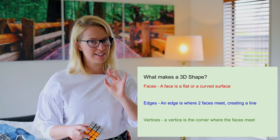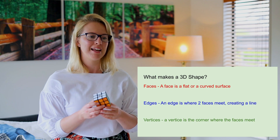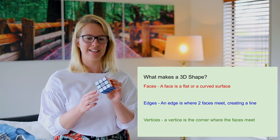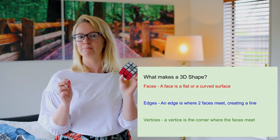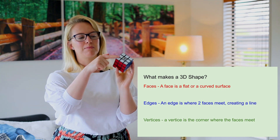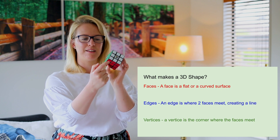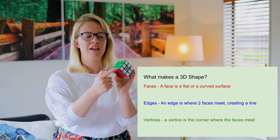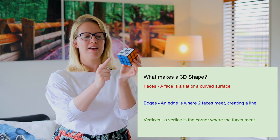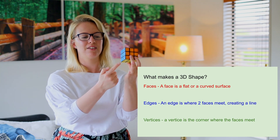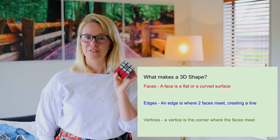The third thing that makes it a 3D object or a 3D shape is it has vertices, which is a corner where all the edges meet. Here are some different edges coming together to meet at the vertices. So let's count how many there are: one, two, three, four, five, six, seven, eight. So a cube has eight vertices.